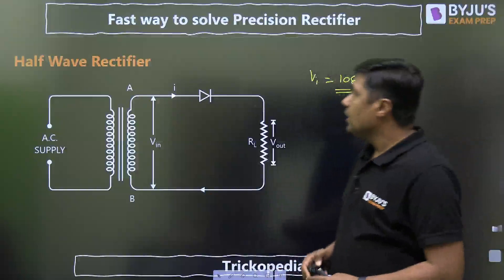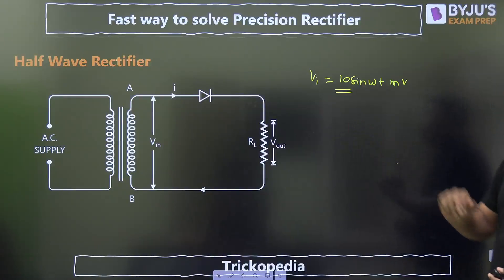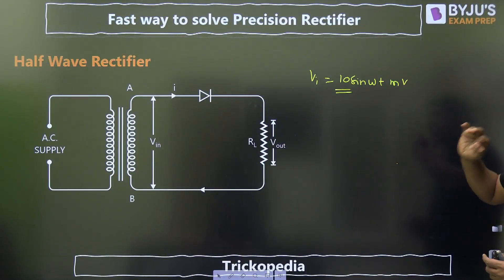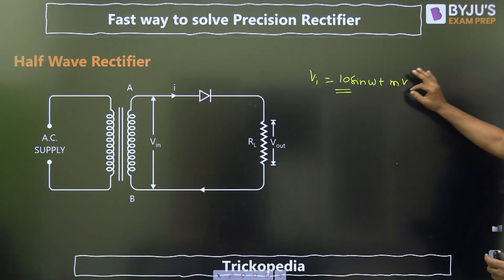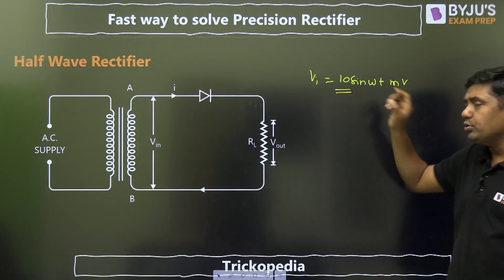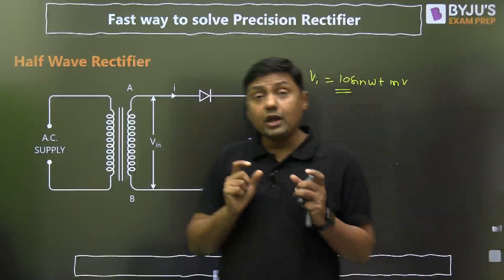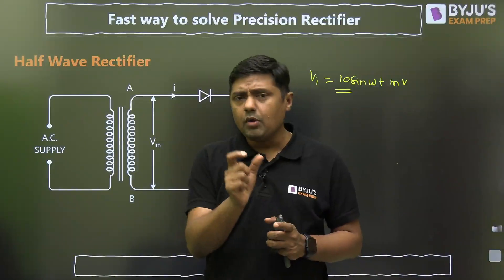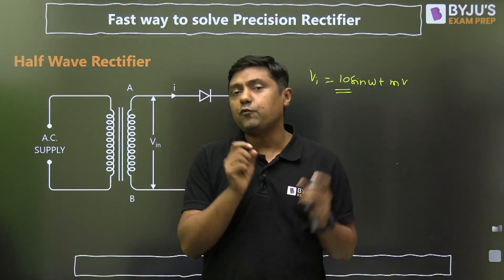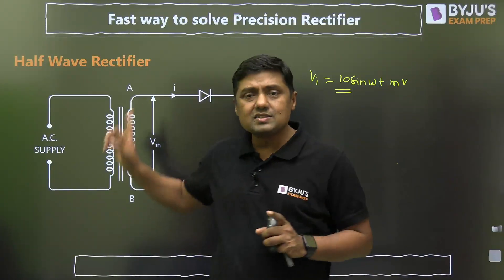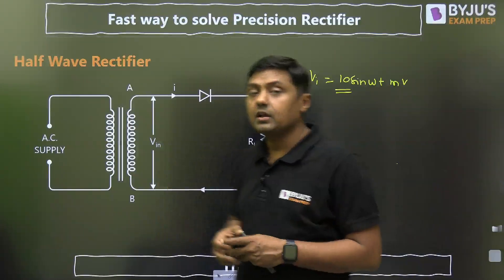Now watch this diagram. This is normal half-wave rectifier, passive half-wave rectifier. But it can't rectify 10 sin omega t millivolt. Why? Because it is a small signal, highest value is 10 millivolt. If we are assuming practical diode, minimum 0.7 volt is required for silicon diode. Means this circuit can't rectify this signal.